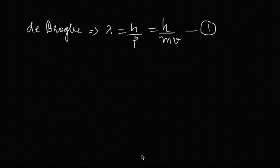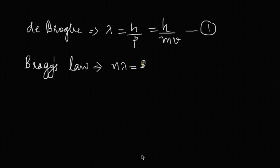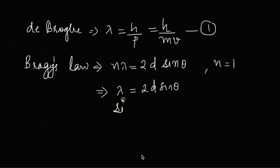For the diffraction pattern, for the first minimum we use Bragg's law which says n lambda equals 2d sin theta. Here we are taking the first minimum so n being 1, this equation can be rewritten as lambda equals 2d sin theta, or sin theta equals lambda by 2d.